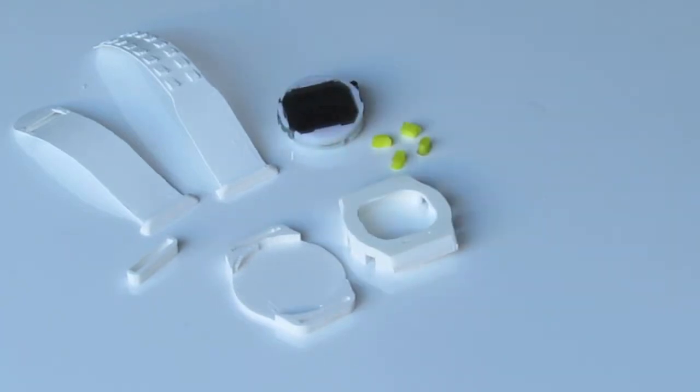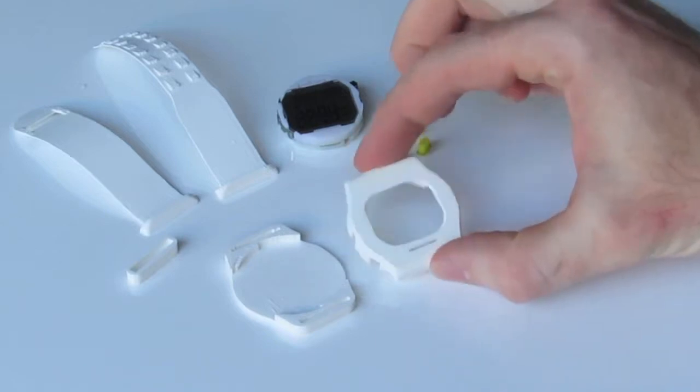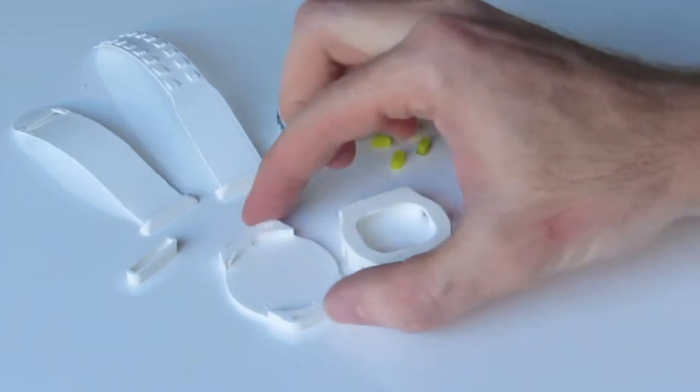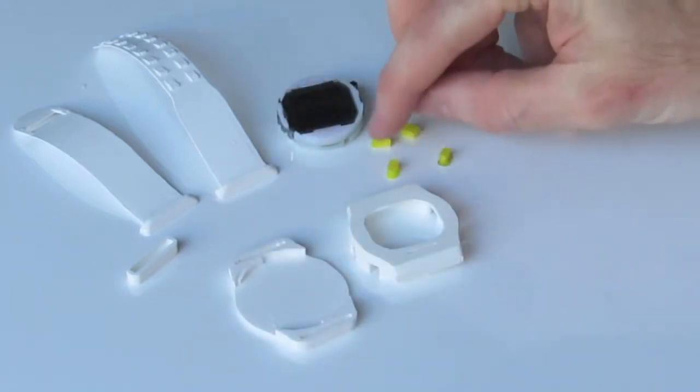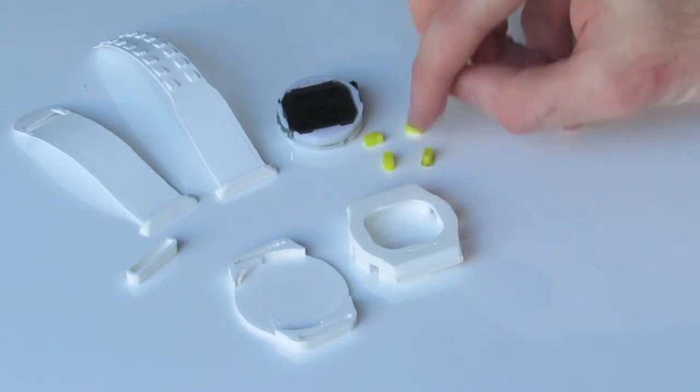So there's a few 3D printed parts to this project. We've got our main watch body here which comprises of a top and a bottom component. We've got our four buttons here which have been printed in a different color. You might want to do something similar.